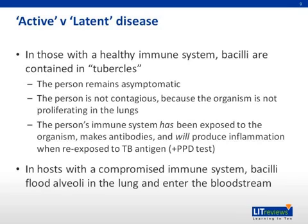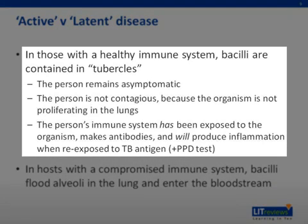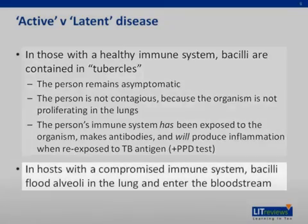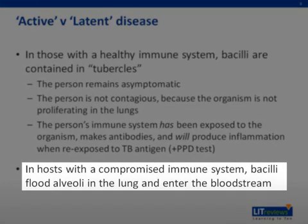When thinking about active versus latent disease, individuals with a healthy immune system are able to contain the organism in tubercles, so the patient remains asymptomatic. The organism does not proliferate or spread throughout the lungs, and therefore the patient does not spread it when coughing. The person's immune system, having been exposed to the organism, will make antibodies and will always produce inflammation when re-exposed to the TB antigen. That's how the PPD test can test for previous exposure in any patient who has a latent disease. In hosts with a compromised immune system, however, the bacilli proliferate, flood the alveoli in the lung, enter the bloodstream, and spread to other organs.